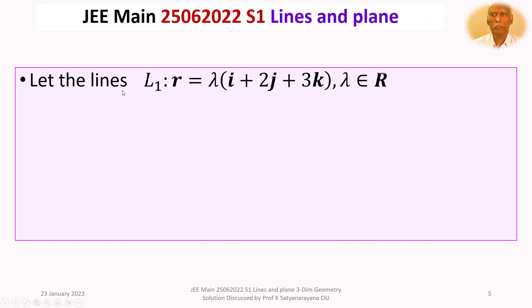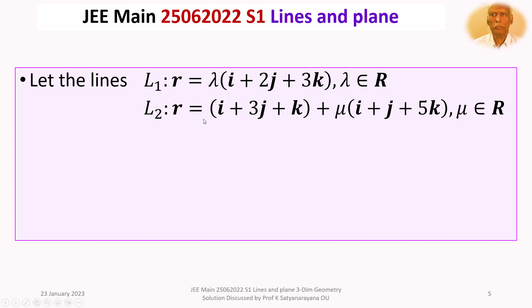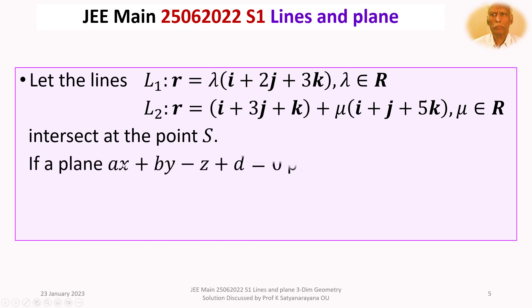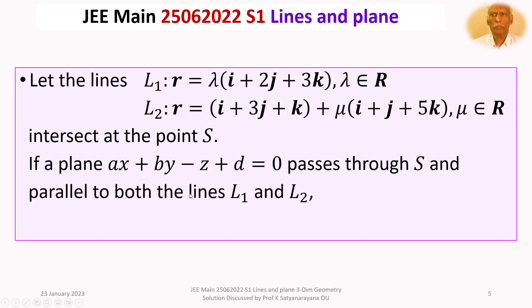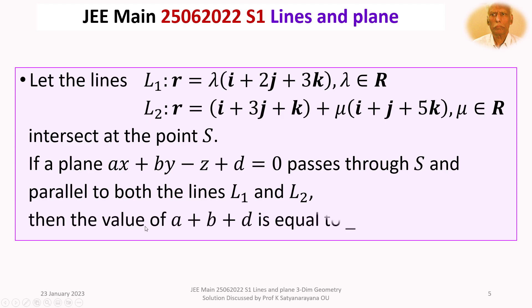The given question is: let the lines L1, whose vector equation is given by R = λ(i + 2j + 3k), where λ belongs to the set of real numbers. L2: R = (i + 3j + k) + μ(i + j + 5k), where μ belongs to the set of real numbers. These two lines L1 and L2 intersect at the point S. If a plane AX + BY - Z + D = 0 passes through S and is parallel to both lines L1 and L2, then find the value of A + B + D.